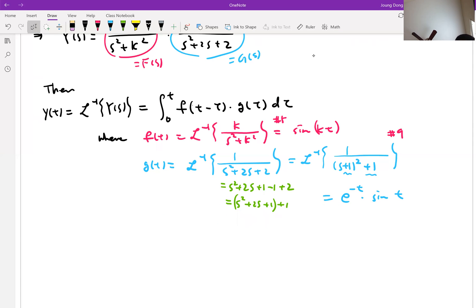And that's it. So now we are almost there. We can plug in all this f of t and gt into my convolution there. So that is equal to integral 0 to t f of t minus tau, which is sin k of t minus tau, times g of tau, e to the minus tau times sin tau d tau. Is that clear? That's it.